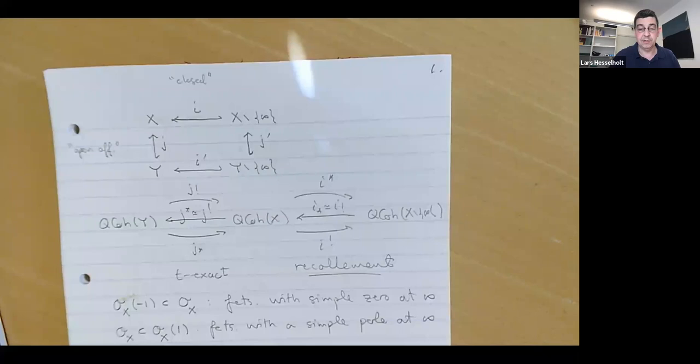What I would like to explain is how the circle action leads to this curve that Fargues and Fontaine constructed in p-adic Hodge theory.